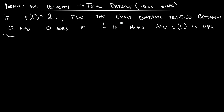The key word in this problem is exact distance. We really only have one method of finding exact total change, and that's by using the exact area underneath the curve. The table is an approximation, and counting squares underneath the graph is an approximation. But finding shapes is exact.